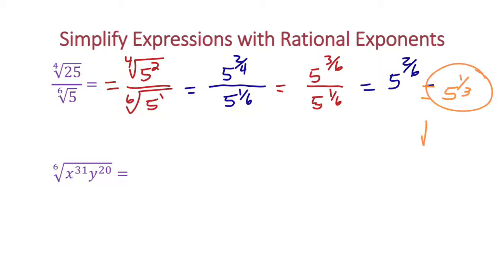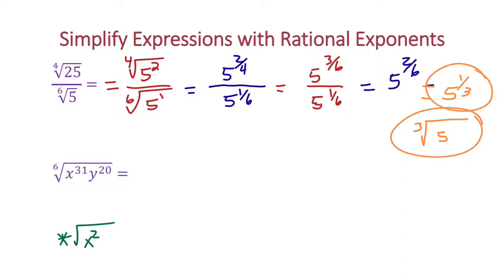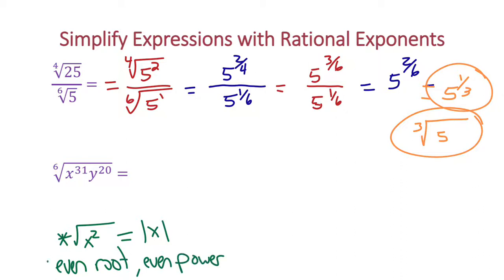That would be my final answer. Or if you want to write it back in radical form, that's the 3rd root of 5 — both are correct. Now for the next one, it might be a bit trickier, so let's do it the radical way. Remember: when you have a square root of x squared — or any even root with an even power — you're going to have an absolute value.